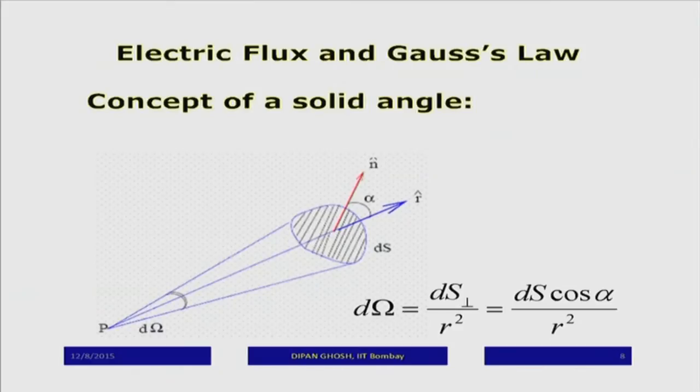The question was: why is it that when we put a charge inside, we have a flux coming out — positive or negative depending on the sign of the charge — whereas if the charge is outside, there is no flux? Let us look at this in a slightly different way. Before doing that, let me explain the concept of solid angle. Suppose I have a surface here and I am looking at a point P. I will define that a surface makes a solid angle at point P — let me explain this by comparison with something familiar.